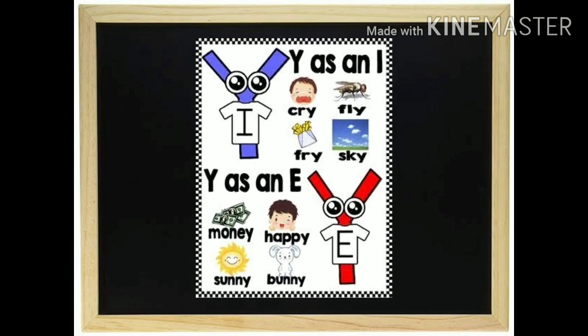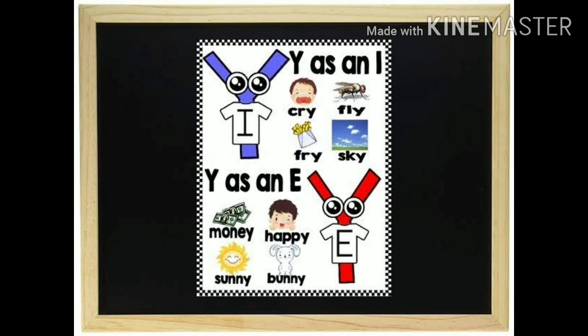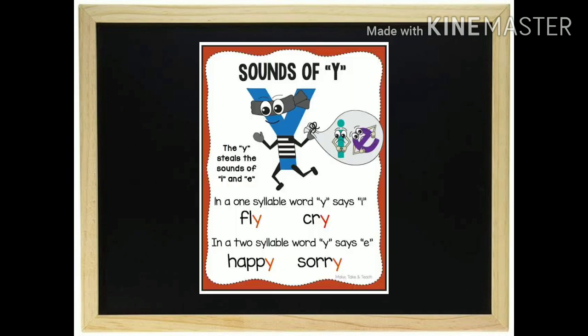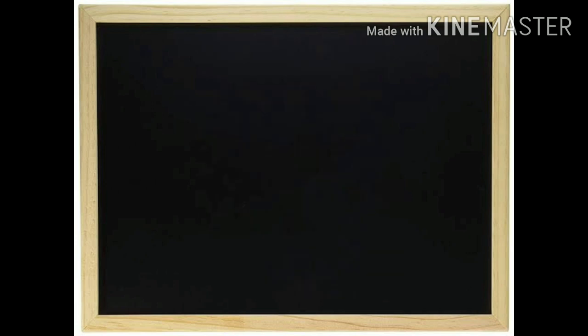Y acts as I in words like cry, fly, sky. And sometimes it acts as E, like happy, sorry, marry — in these words it sounds as E. So we can come to a conclusion: Y carries the sounds of both I and E, and acts as a vowel.